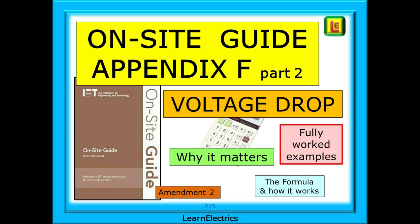This is part two of our look at Appendix F of the On-Site Guide, an often underused appendix full of very useful information. We are working to Amendment 2 of the wiring regulations, the Brown Book, and all page numbers refer to the Brown Amendment 2 On-Site Guide.